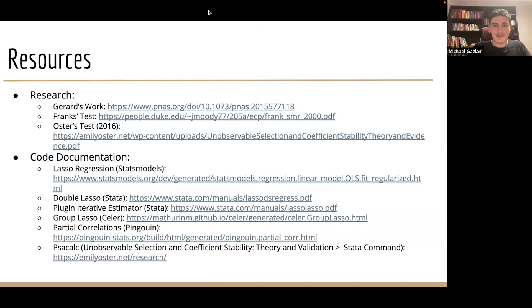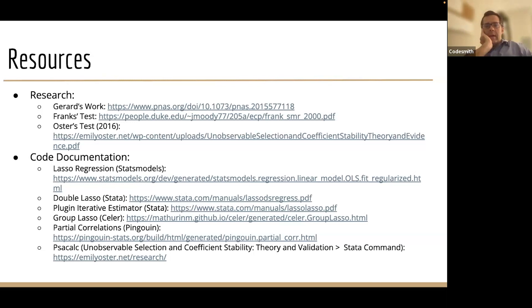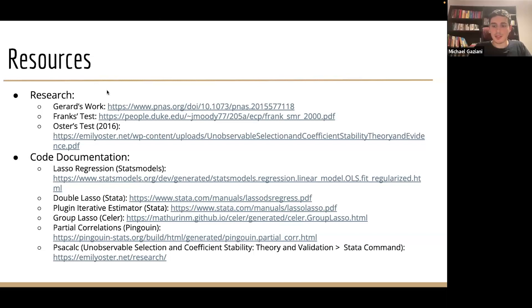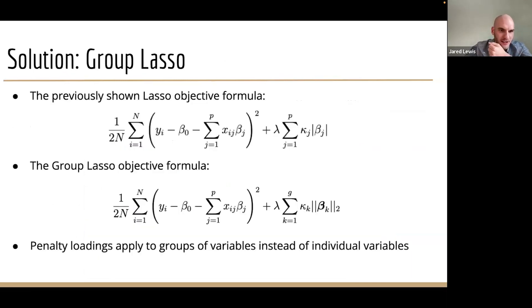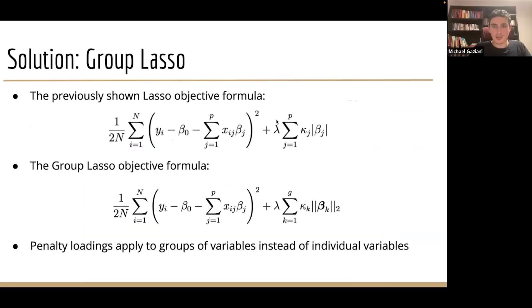I see some questions in the chat. Could someone explain the kappa parameter in the lasso regression with more detail — in terms of what role it plays in the model fitting process? Can you scroll back up to it?